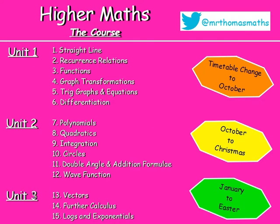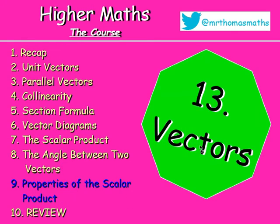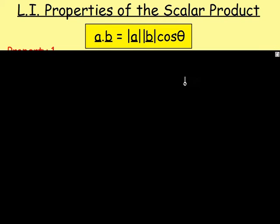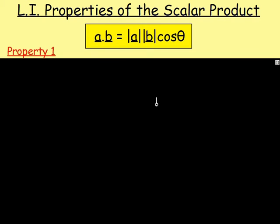It's time for Maths with Mr. Thomas. Vectors, Chapter 13, Lesson 9: Properties of the Scalar Product. We were introduced to the scalar product a couple of lessons ago. The scalar product A dot B equals the magnitude of A times the magnitude of B times cos theta. What we are now going to do is summarize what we have learned about that and introduce a couple more properties.